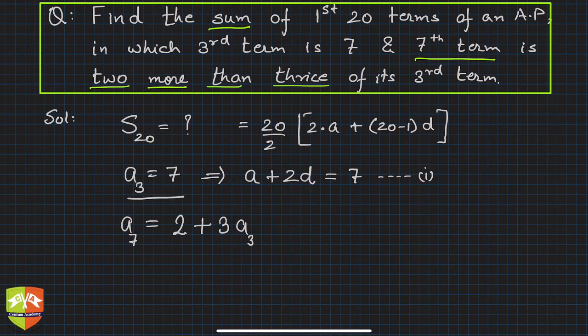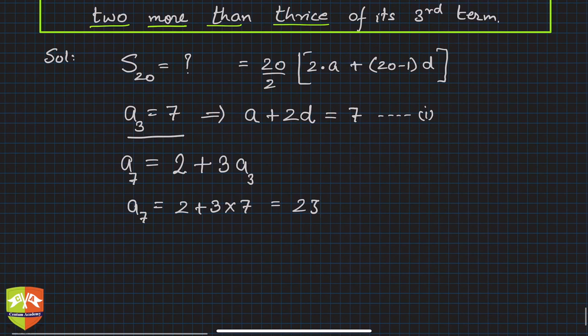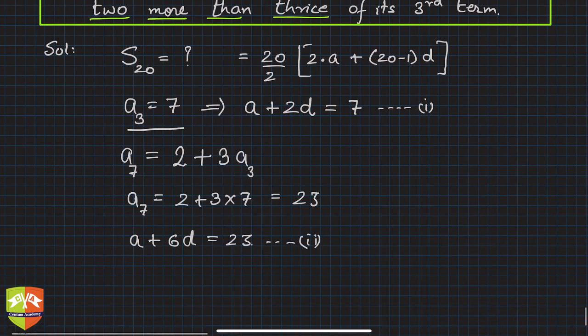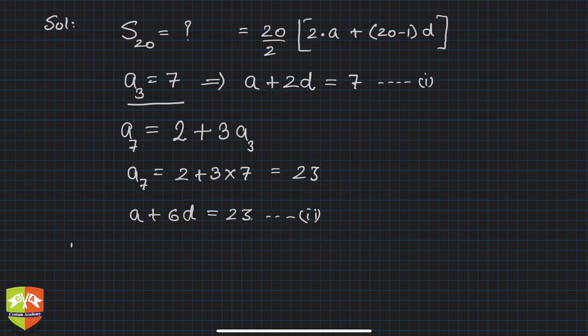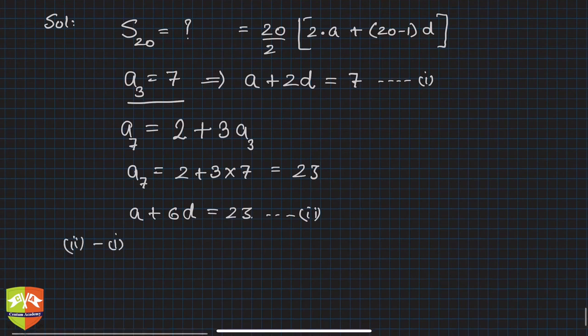So clearly a_7 is 2 plus 3 times 7, which is 23. So a_7 is 23. And what is a_7? a_7 is a plus 6d equals 23. This is equation number 2.